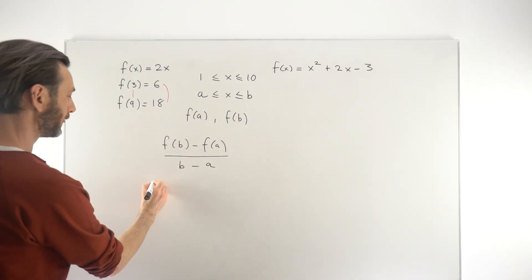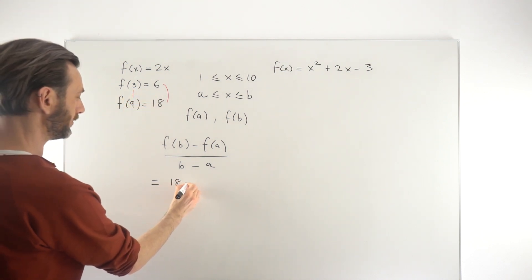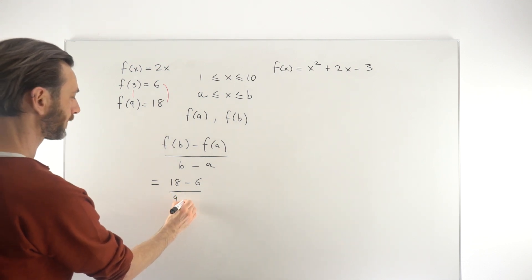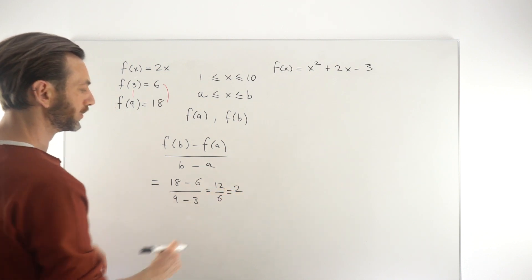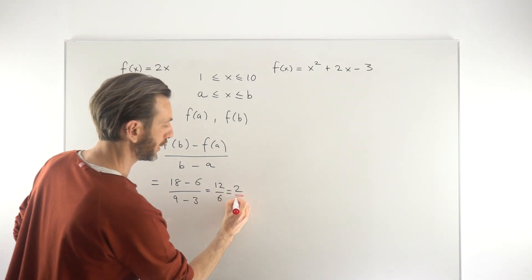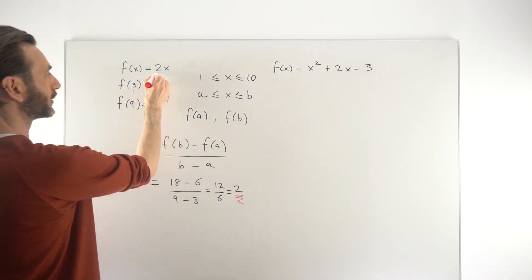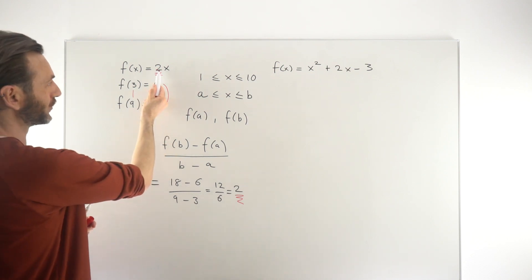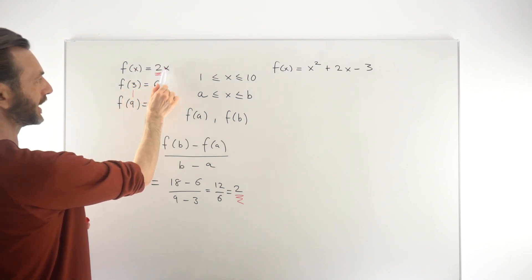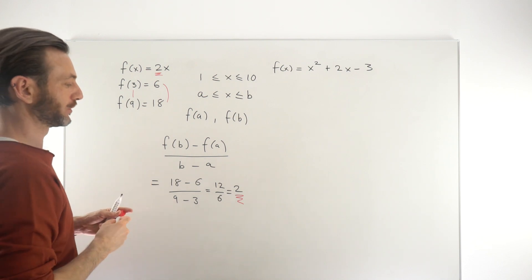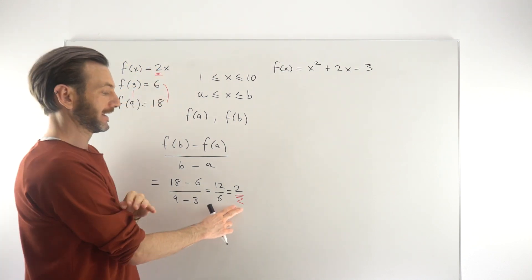If we plug in our earlier numbers — 18 and 6 — we get 18 minus 6 divided by 9 minus 3. That's 12 divided by 6, which is 2. So the average rate of change came out to be 2. But because this was a linear function — a straight line graph — the gradient was already known to be 2, since that is the coefficient in y equals 2x. For straight line equations, the gradient of the line is exactly the rate of change.